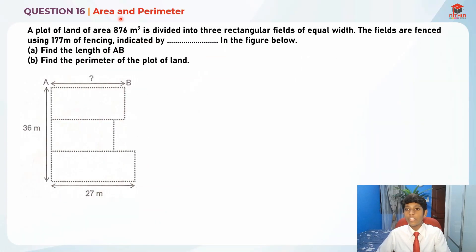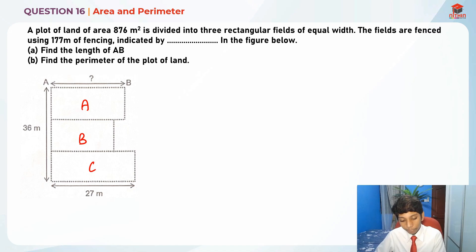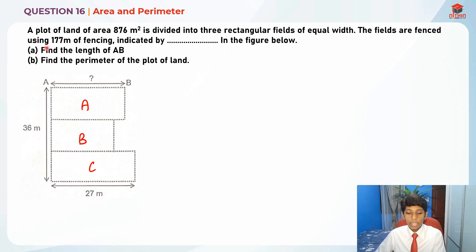Question 16 is actually testing us on area and perimeter, and it has two parts: Part A and Part B. A plot of land of area 876 square meters is divided into three rectangular fields of equal width — let me label them A, B, and C. The fields are fenced using 177 meters of fencing, indicated by the dots in the figure.